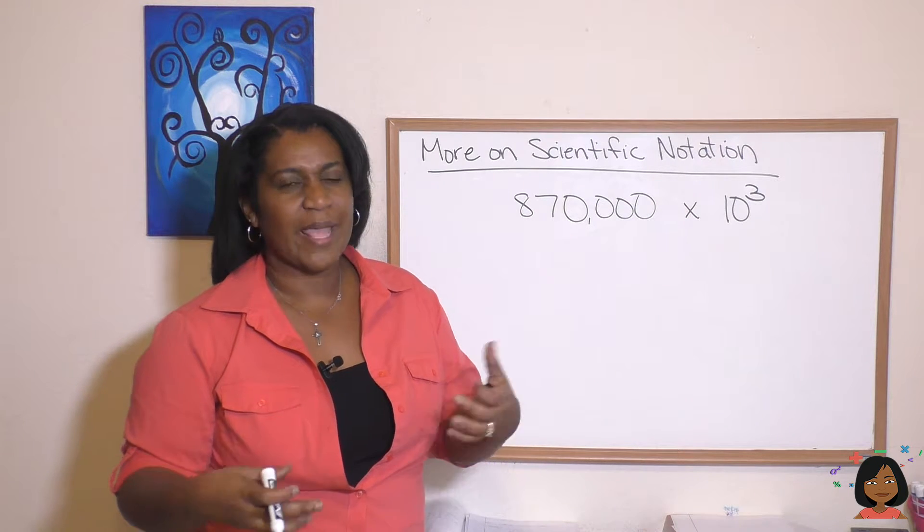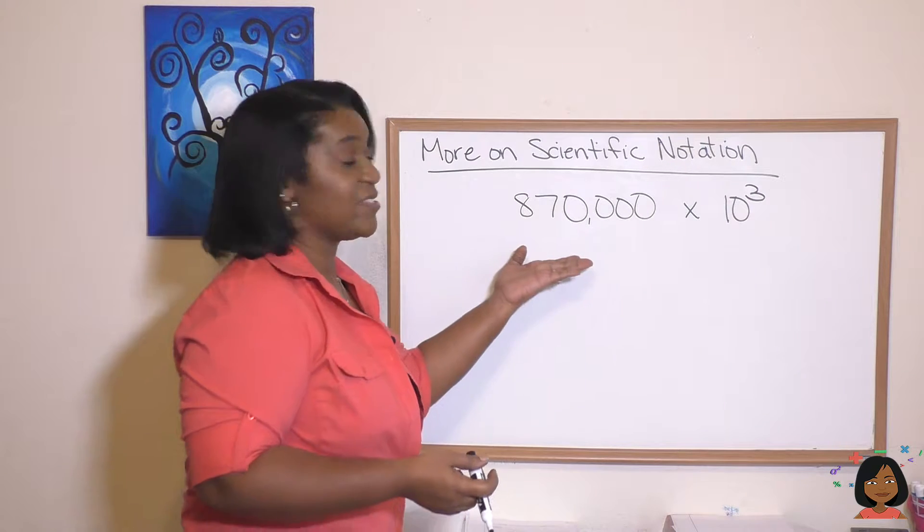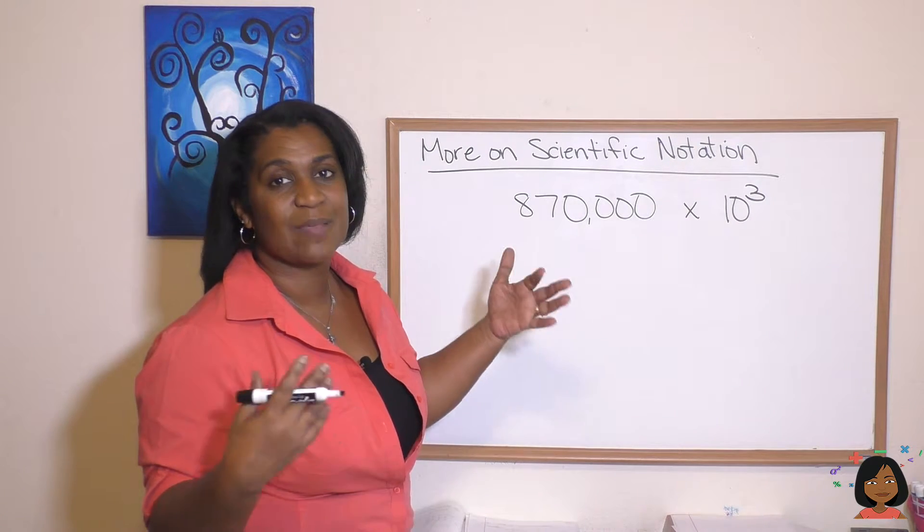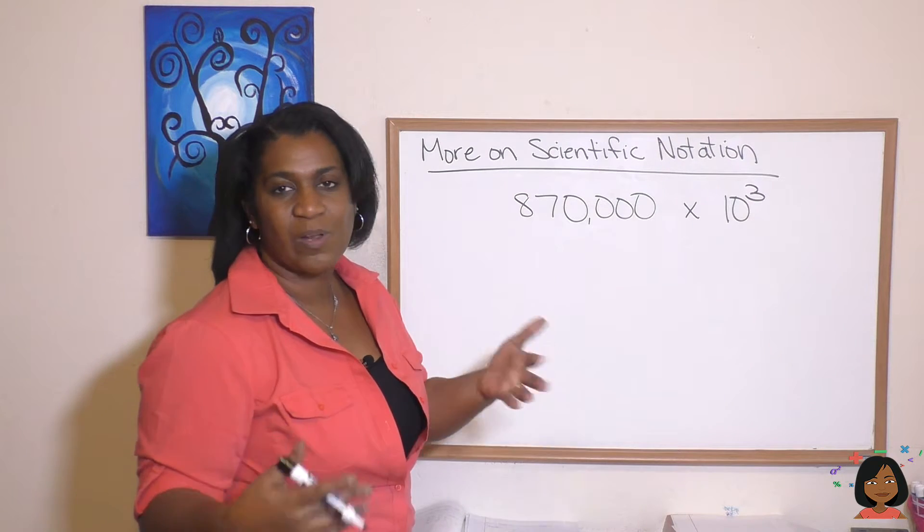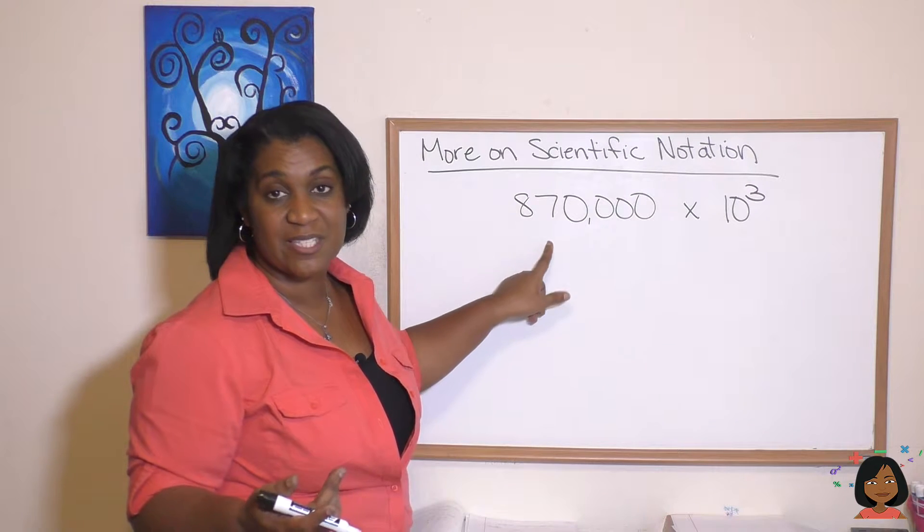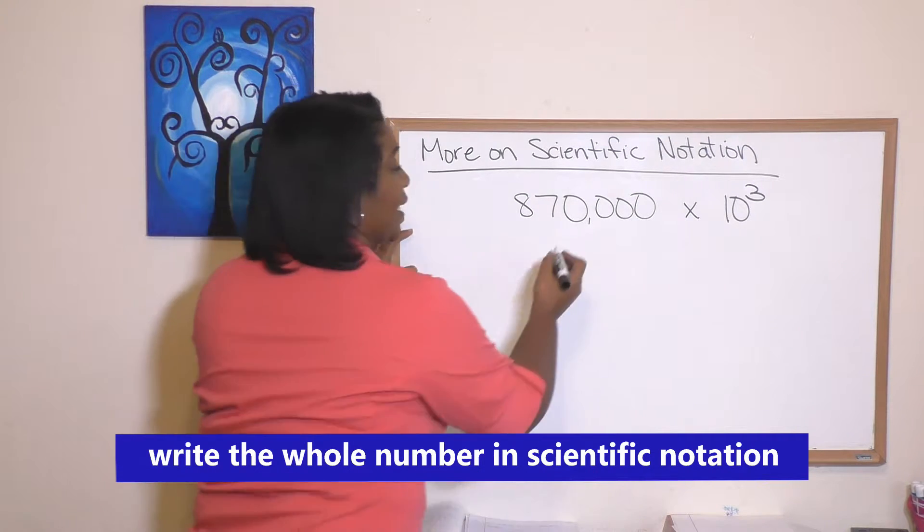Well, we're gonna add to that today. Take a look at this. So let's say I had this nice big number, 870,000. I'm gonna multiply it times ten to the third, but I don't want to get in the habit of writing all these big numbers. The first thing we learned is that we could take this number and put it in scientific notation, and that would help us. So let's do that first.